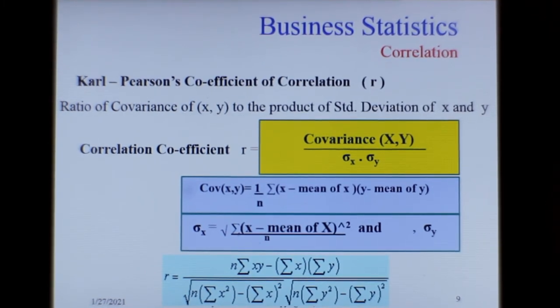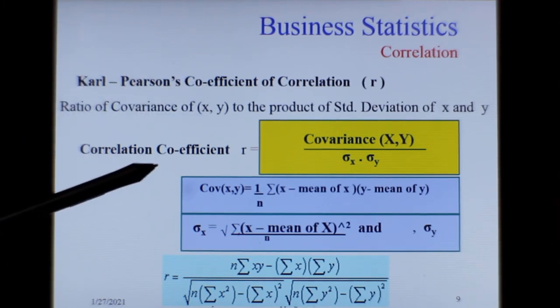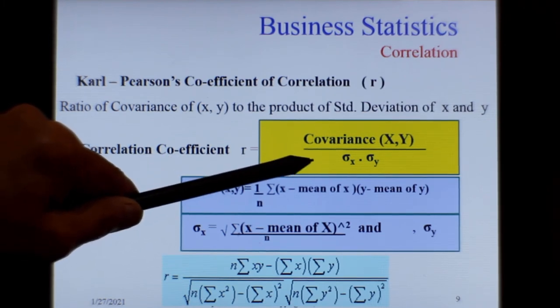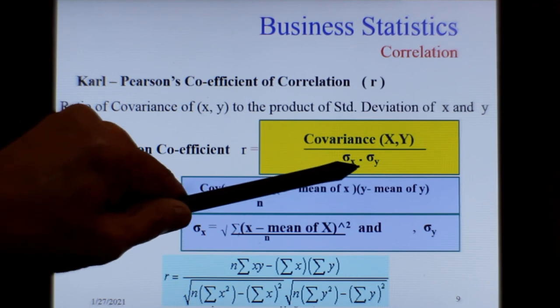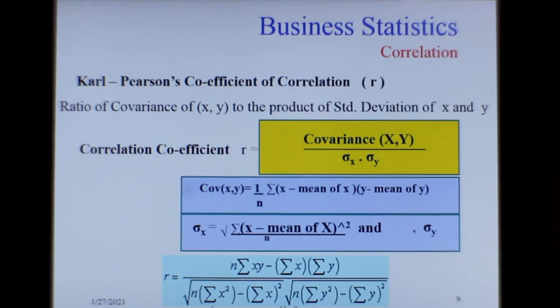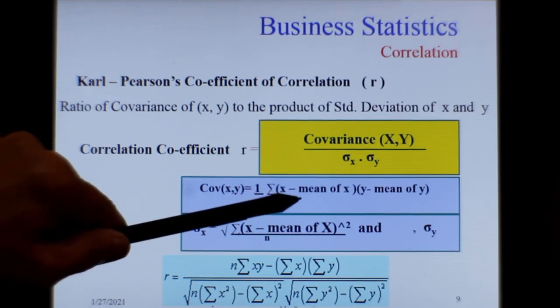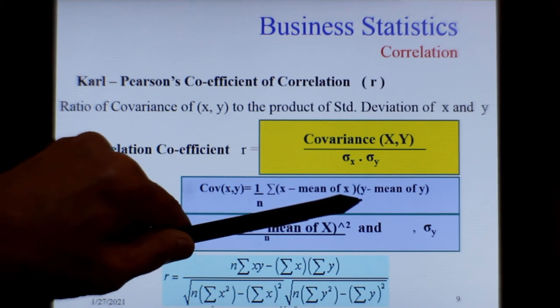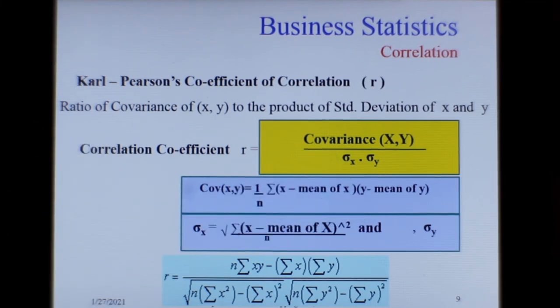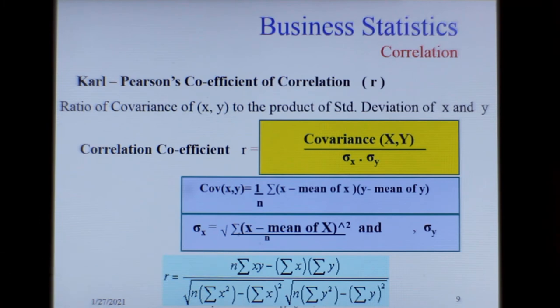Now how to calculate Carl Pearson coefficient of correlation. The correlation coefficient r is given by covariance of x and y over standard deviation of x into standard deviation of y. And covariance is 1 over n sigma the variable minus the mean of the variable multiplied by the other variable minus the mean of the other variable. When you simplify it, the formula becomes a very simple formula like this. With the help of this formula you can build a table and calculate the Carl Pearson coefficient of correlation very easily.